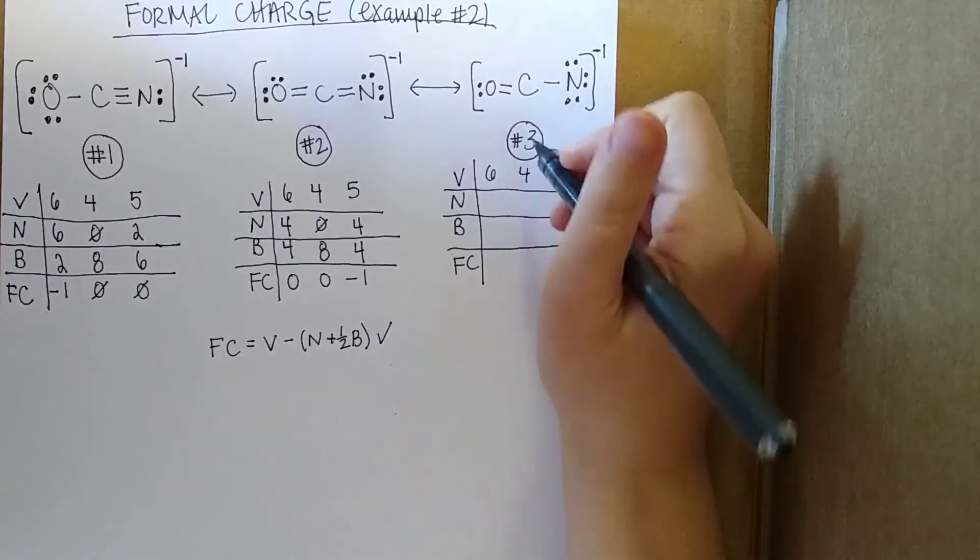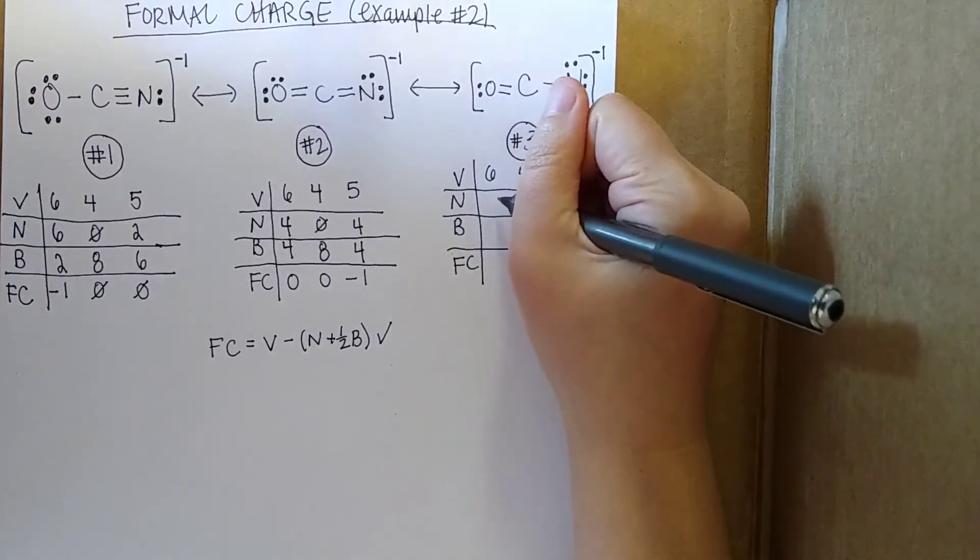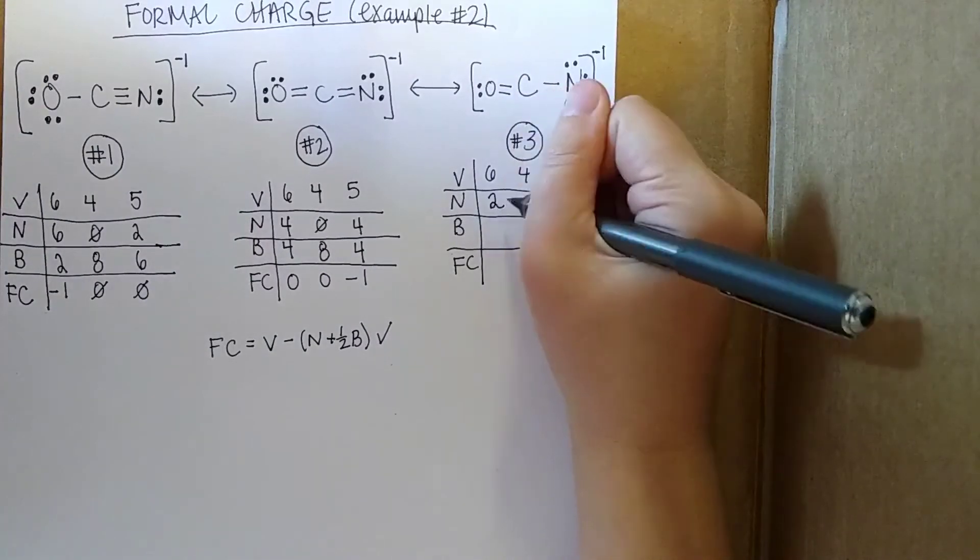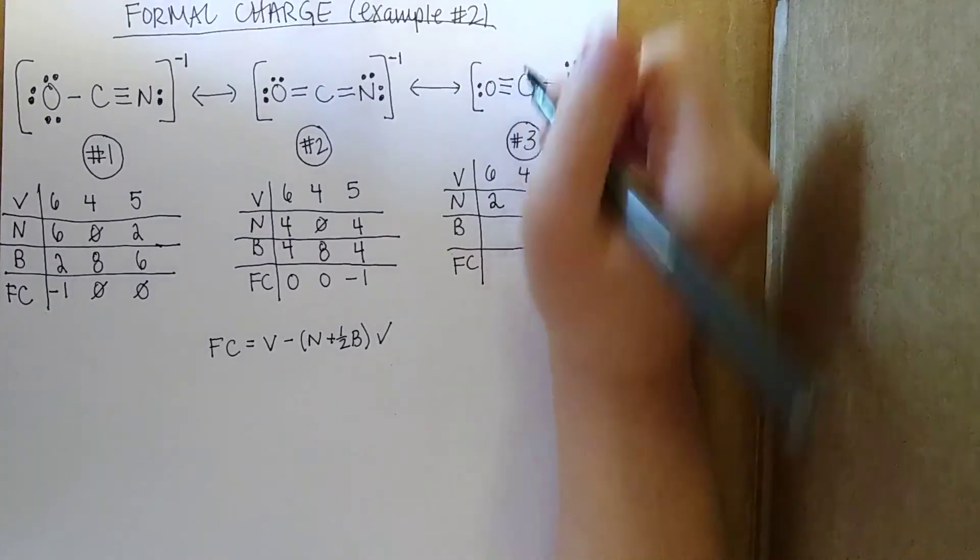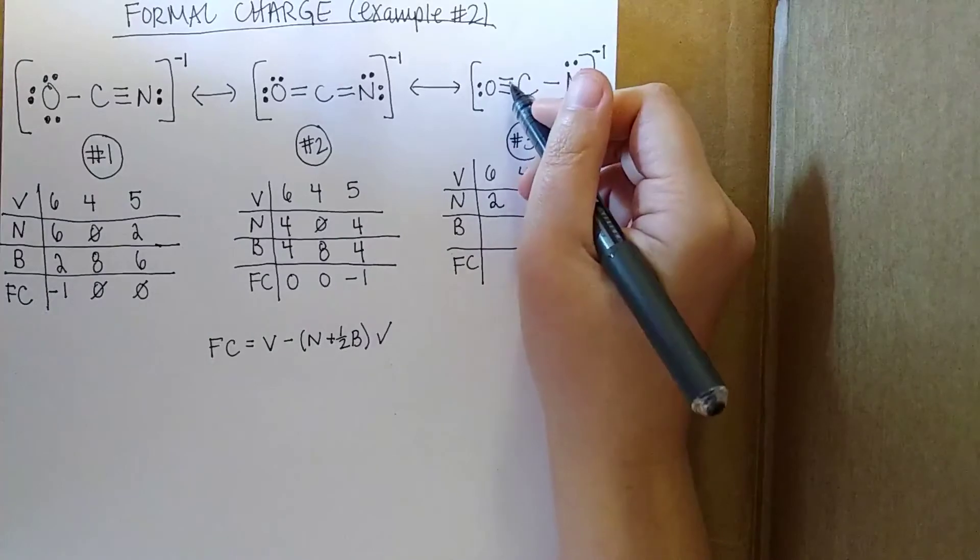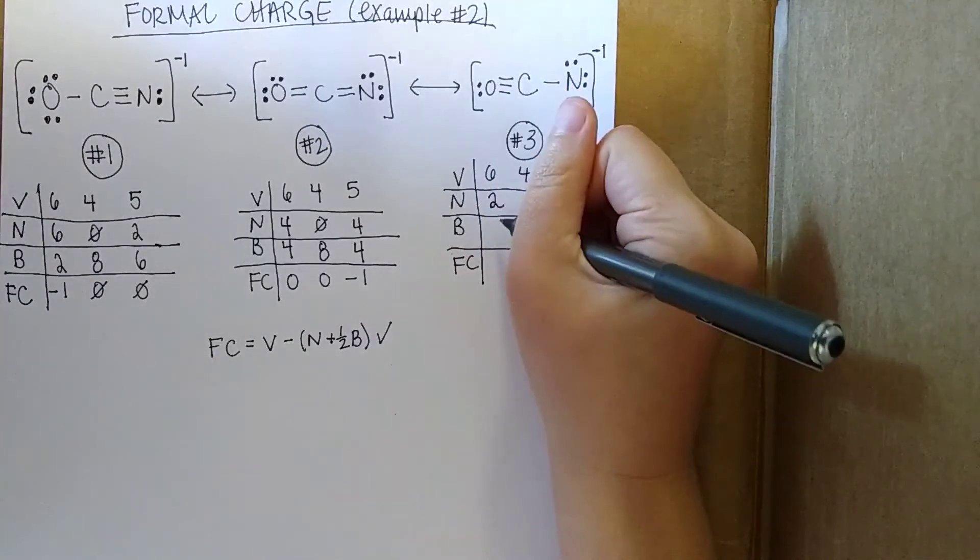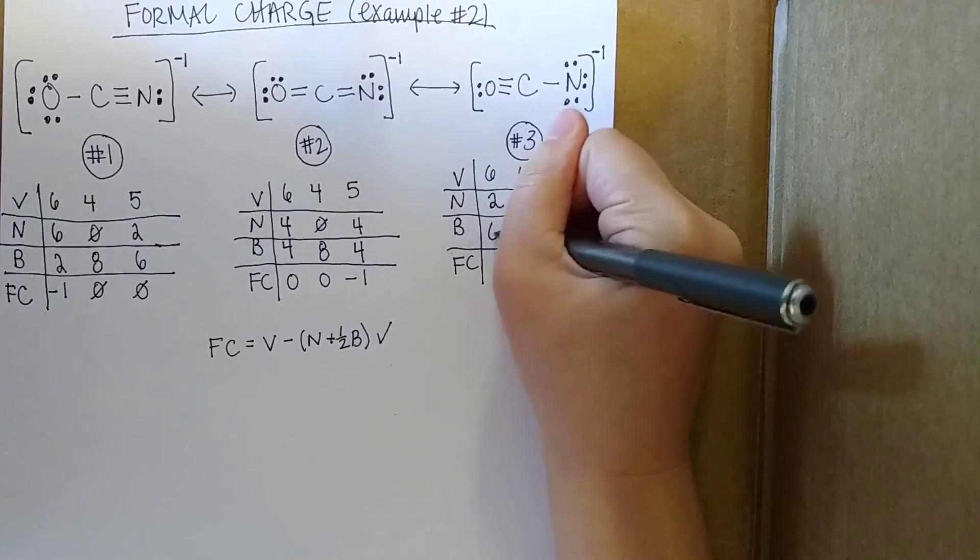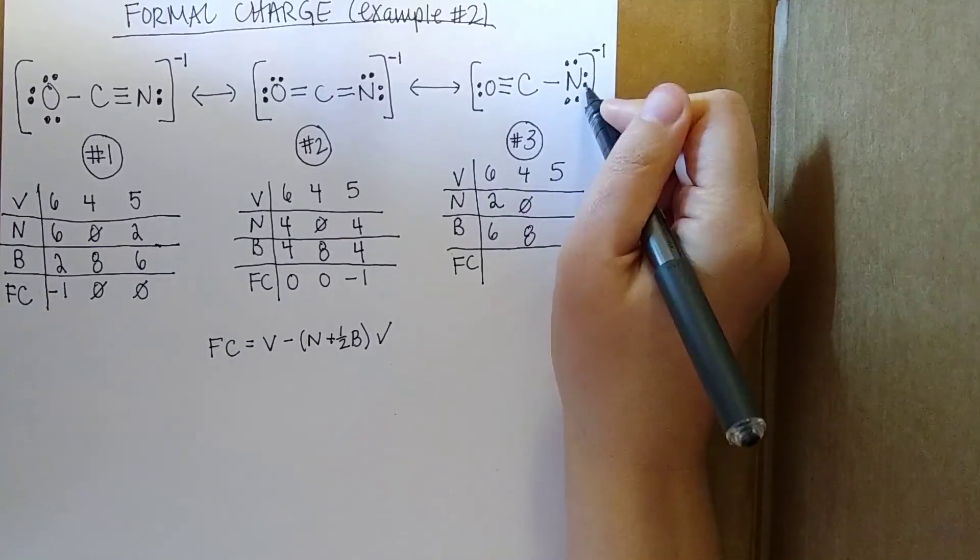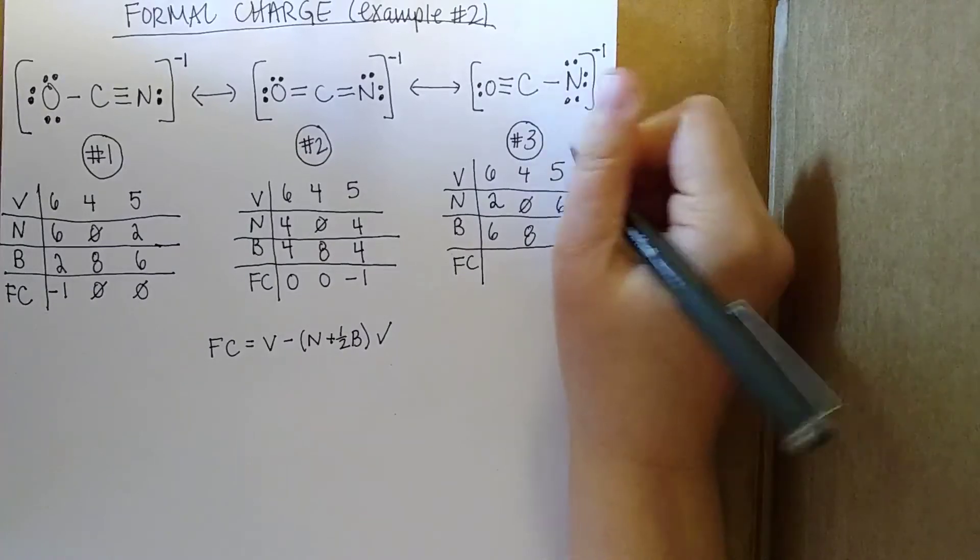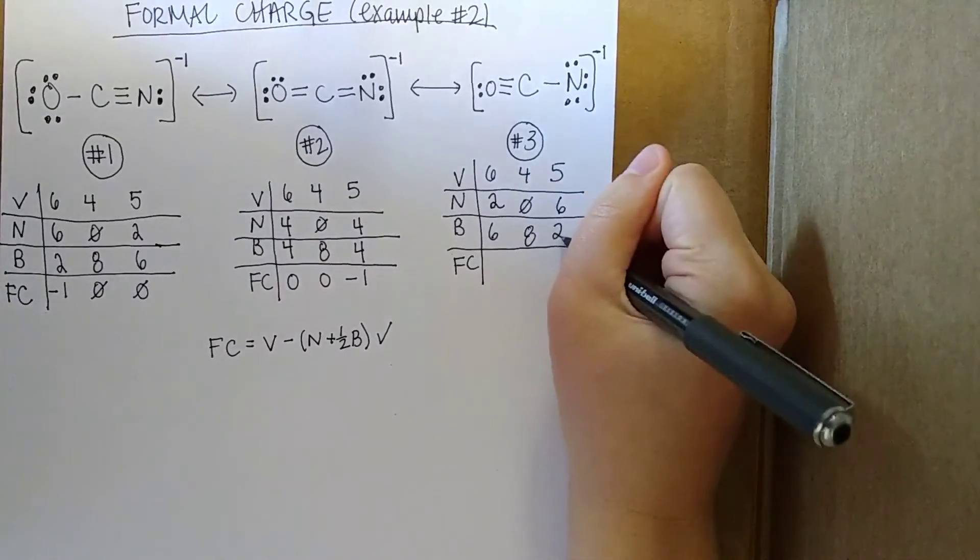I'll do the same for this last guy. So this guy has 2 non-bonded. Sorry, this was supposed to be a triple bond. So it has 2 non-bonded and then 6 bonded. This has 0 and 8. And this one has 6 non-bonded and 1 bond here, so that's 2.